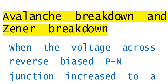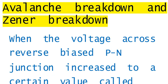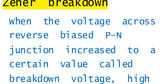Today we are going to discuss the Zener Breakdown and the Zener Breakdown. When the voltage across the reverse-biased PN junction is increased to a certain value called the breakdown voltage,